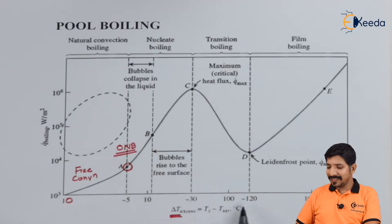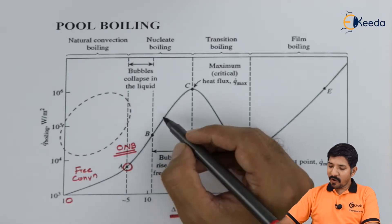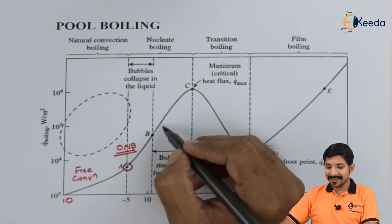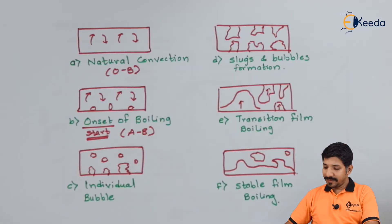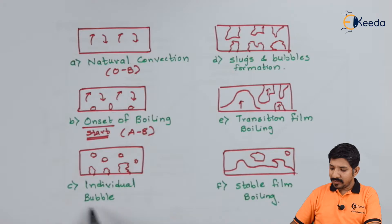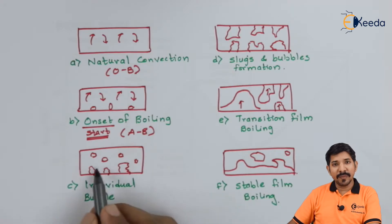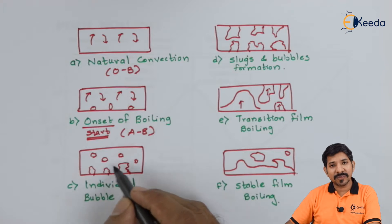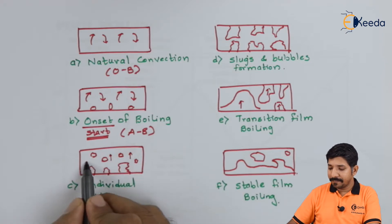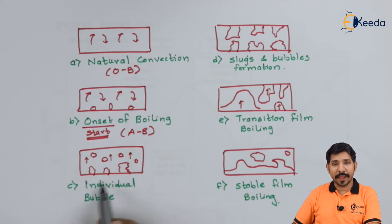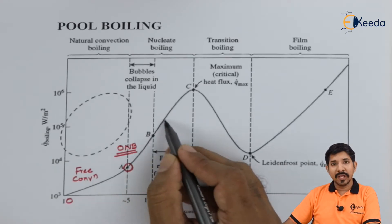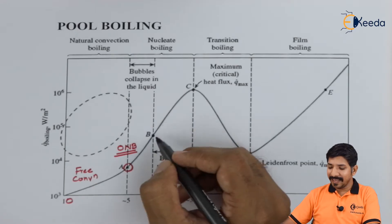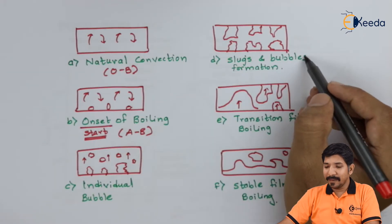If we keep increasing ΔT, point B is around 10 degrees Celsius. After that, if we still keep increasing the temperature, the bubbles will start growing and then detach from the surface. This is the region where individual bubbles form, detach from the surface, and start moving upward. This is actual nucleate boiling, occurring around point B.